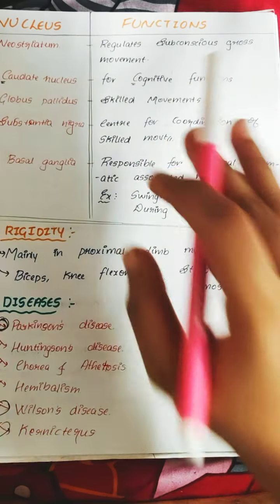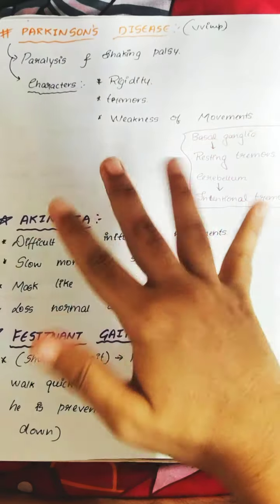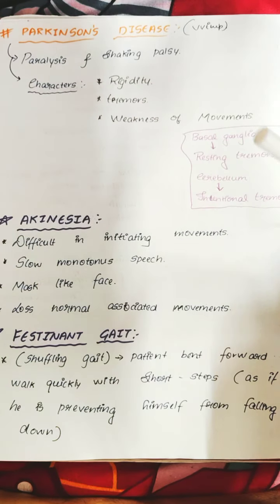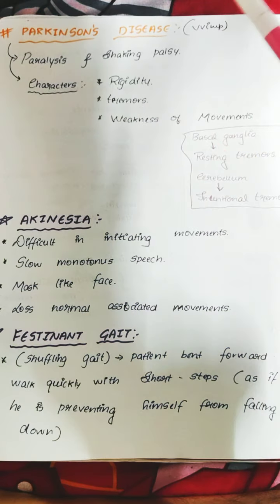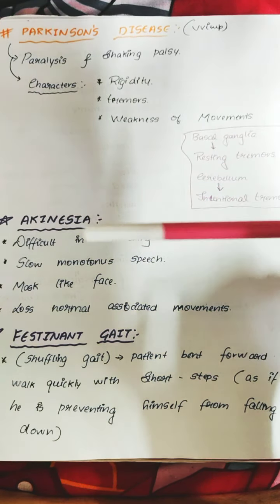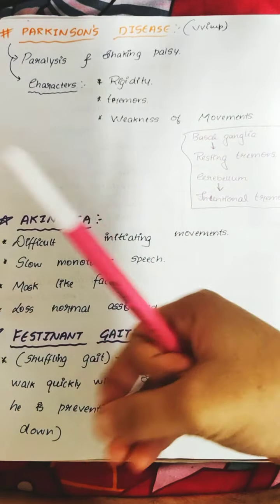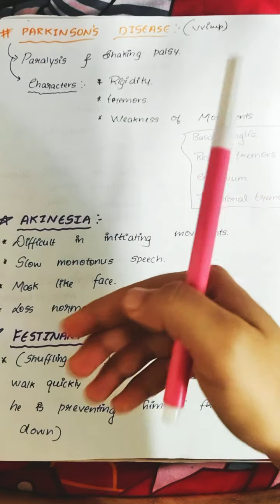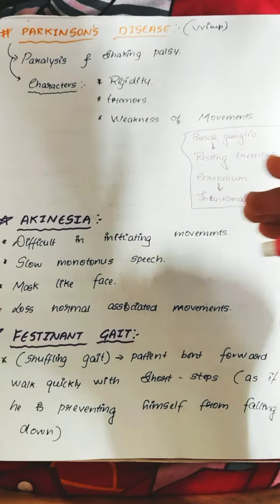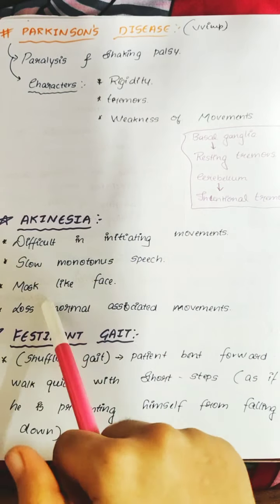Parkinson's disease, also called paralysis agitans or shaking palsy, presents with resting tremors — as opposed to cerebellar lesions which cause intention tremors. Key characteristics include: rigidity (mainly in proximal limbs), tremors, akinesia (difficulty initiating movements), slow monotonous speech, mask-like face, and loss of normal associated movements.